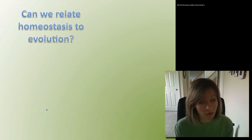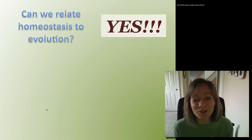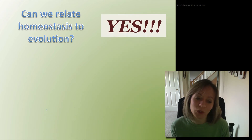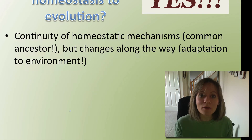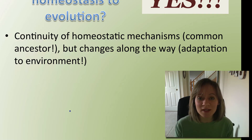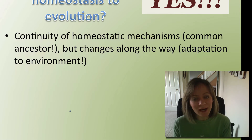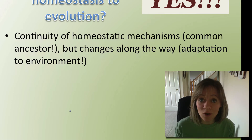Hopefully all year we've been doing a good job of relating concepts to evolution. So can we relate homeostasis to evolution? The answer is a resounding yes, and this is where it gets really cool. When we look at all this biodiversity of life, we notice this continuity of homeostatic mechanisms, which shows us that we have a common ancestor. But when we look more closely, we notice there are little tiny changes and differences because each organism has to adapt to its own specific environment.